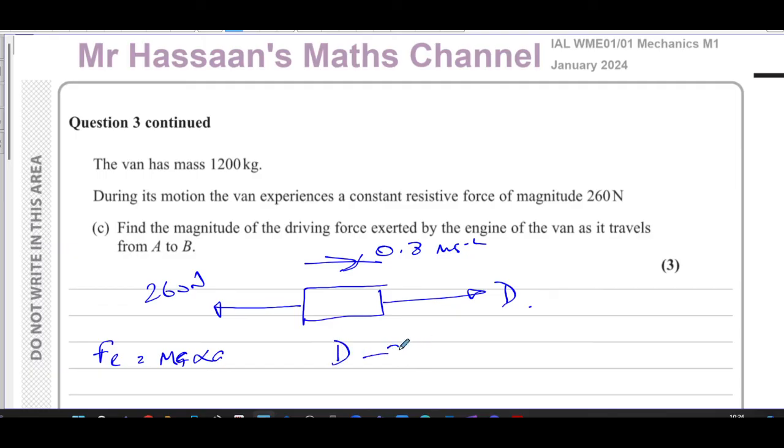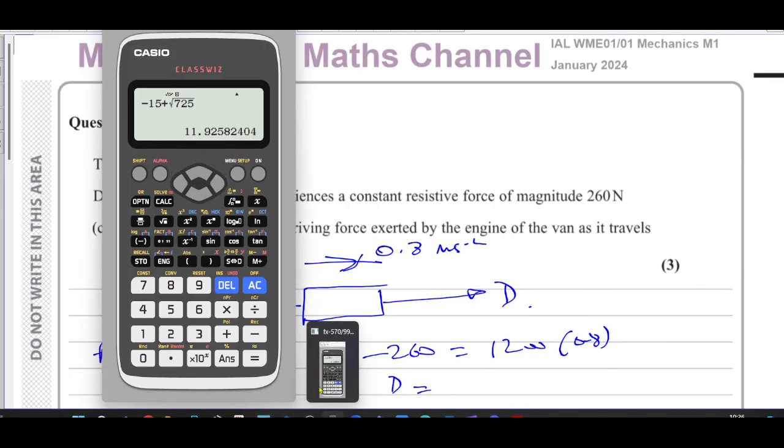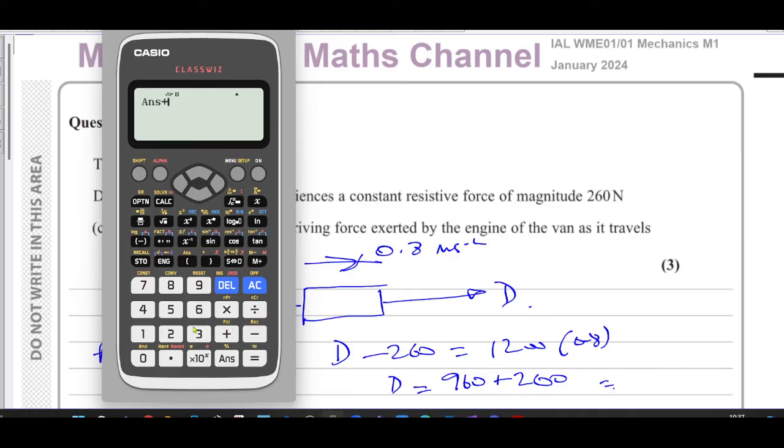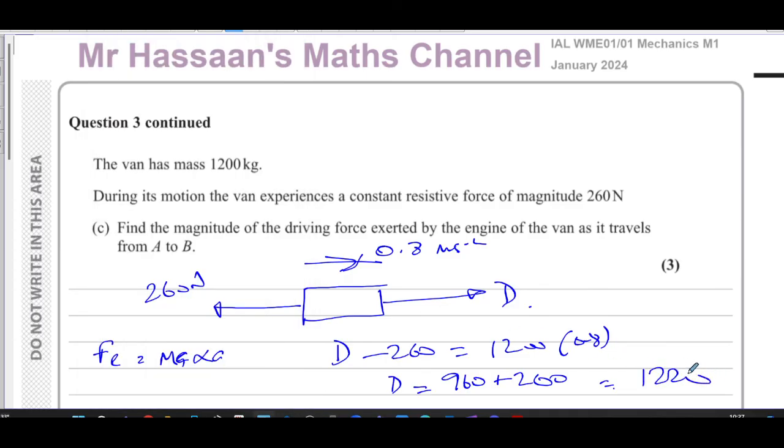So we can say that D minus 260 is equal to the mass which is 1200 times acceleration which is 0.8. So D is going to be 1200 times 0.8, which is 960 plus 260. That gives us 1220, 1220 newtons. That's the driving force exerted by the engine of the van as it travels from A to B, and that's the end of the question.